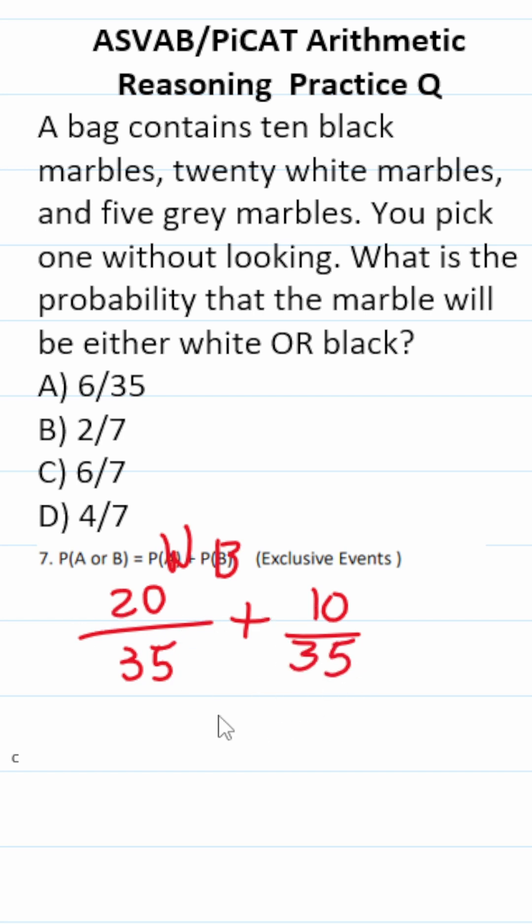Now we just add these up. Again, we keep the denominator the same. 20 plus 10 is 30.